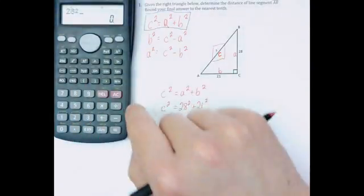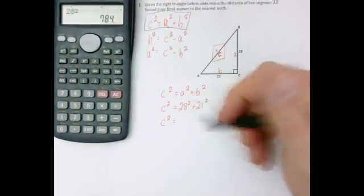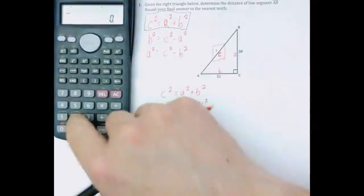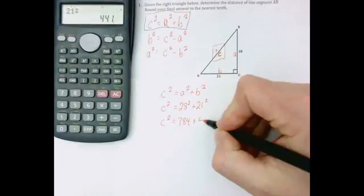So I'm going to do 28 squared. That gives me 784. Plus 21 squared. That gives me 441.